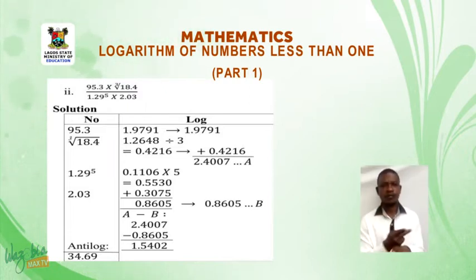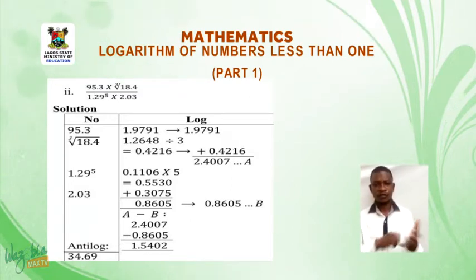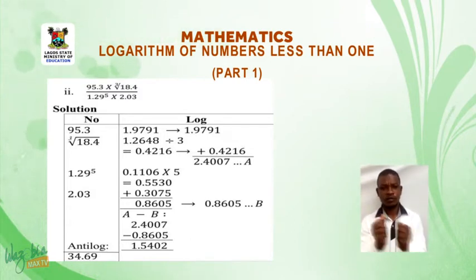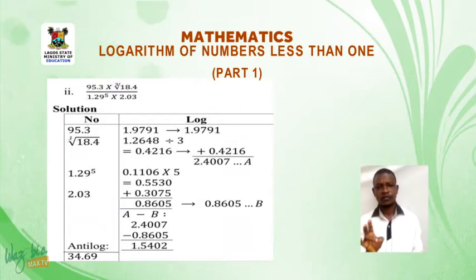Now since both of them are multiplied from the statement of the equation, then we add the log together, which gives us 2.4007. This one is tagged A.